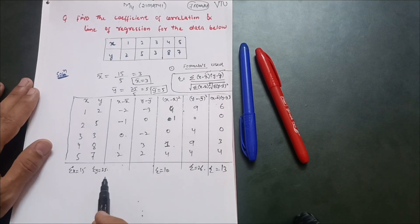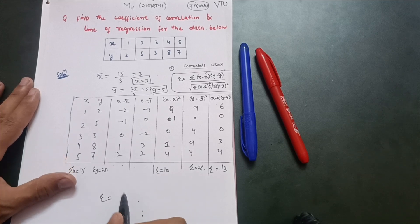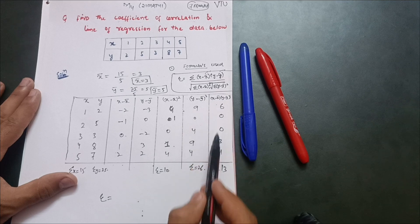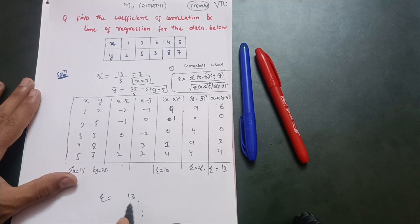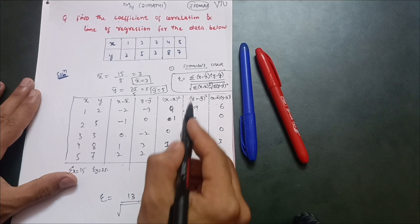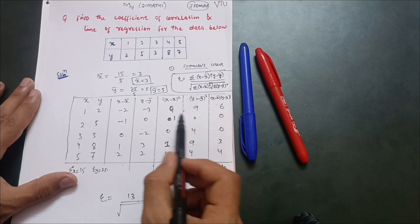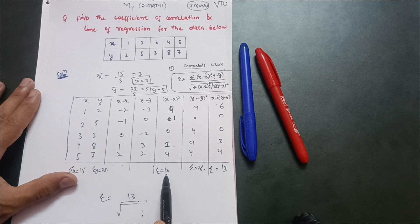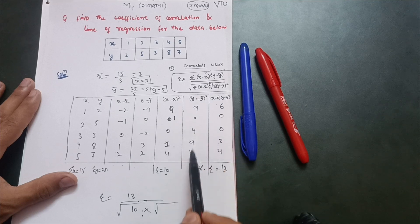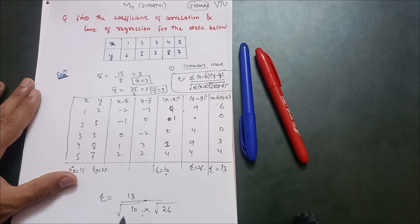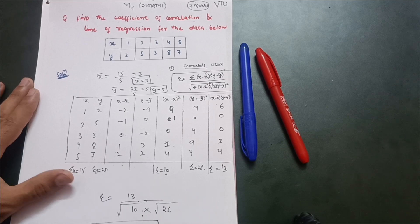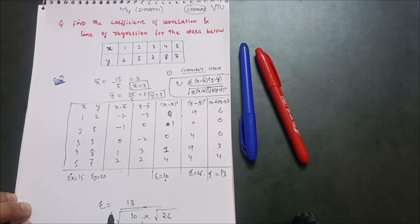Now plug values into the formula: r = 13 divided by √10 × √26, which gives r approximately equal to 0.806. This is the coefficient of correlation. Now we move to finding the lines of regression.